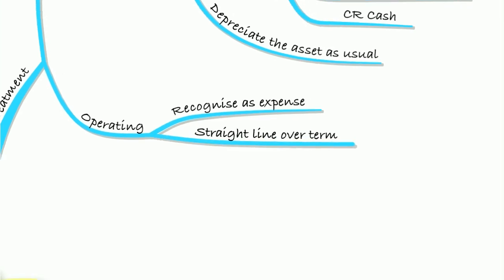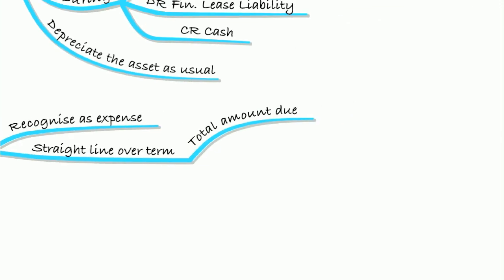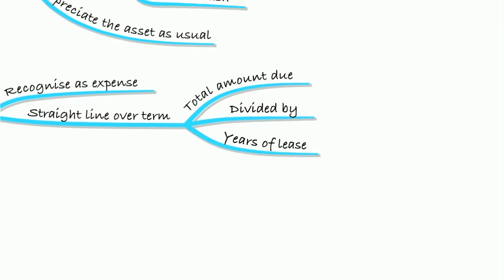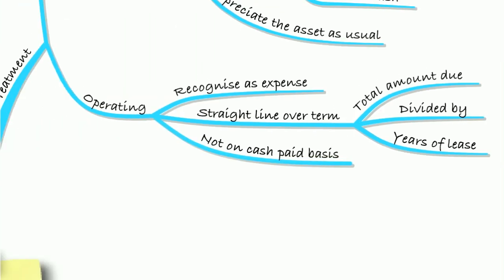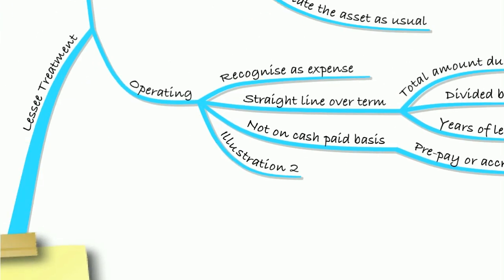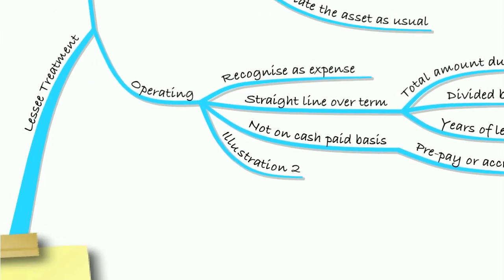However, we don't recognise it on a cash paid basis — we spread it straight line over the term of the lease. The total amount due divided by the number of years of the lease is the amount recognised as an expense each year. We don't do it on a cash paid basis; we prepay or accrue the difference. We looked at how to do that in Illustration 2.